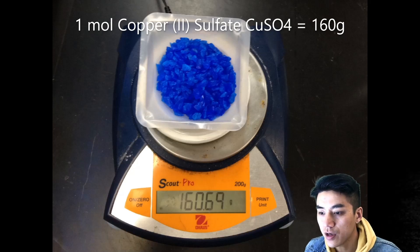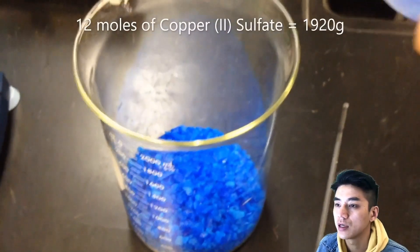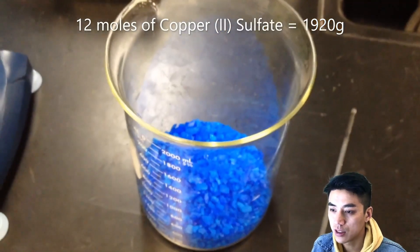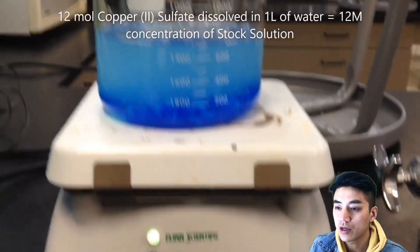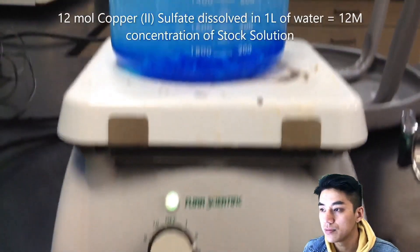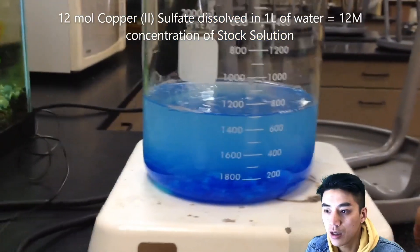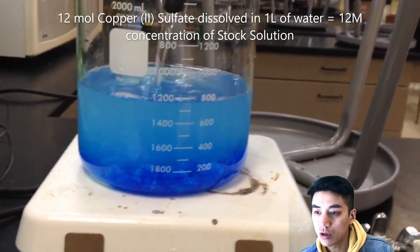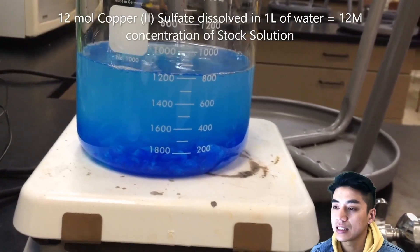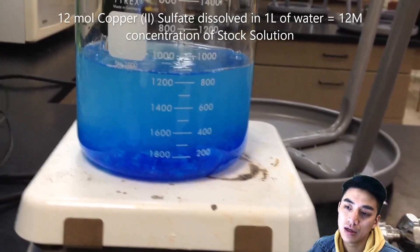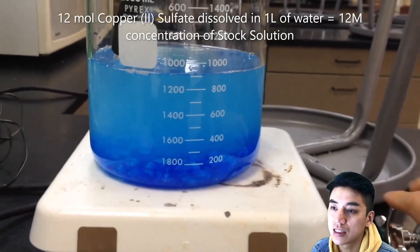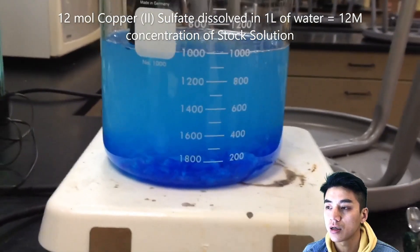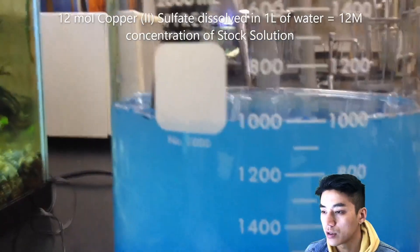This is one mole of copper sulfate. It's 160 grams and we are going to use 12 moles total. So that's 1920 grams of copper sulfate. And we dissolve this in one liter of water. So if you recall what molarity was, it's the moles of solute divided by the liters of solvent. So we have 12 moles divided by one liter of water. This makes a 12 molar solution.